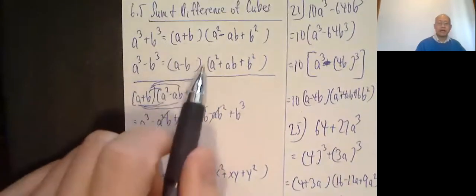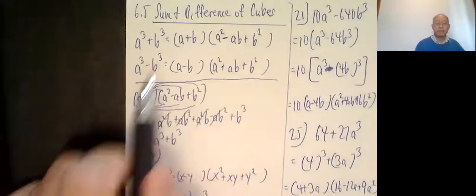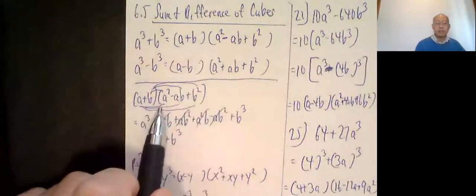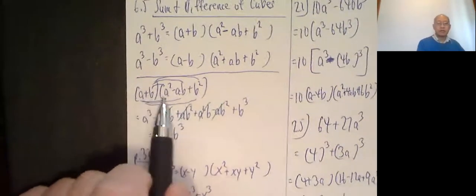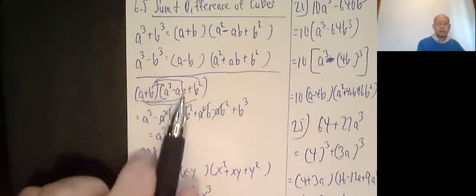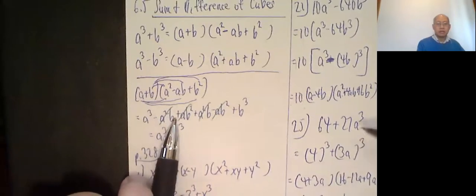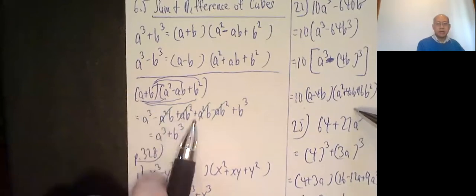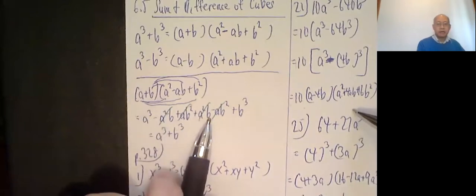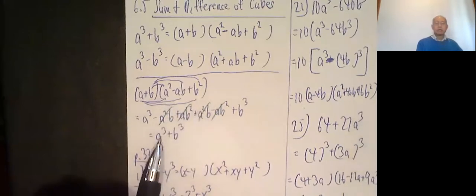So if you were to multiply these back out, this is what you would get. Just for demonstration purposes, let me actually multiply out the top one. a plus b, a squared minus ab plus b squared. So as we know, if we take everything here times everything here, so a times all of these, a cubed minus a squared b plus ab squared. Then b times each of these, a squared b minus ab squared plus b cubed. You'll notice all the middle ones cancel out. And so you do get a cubed plus b cubed.